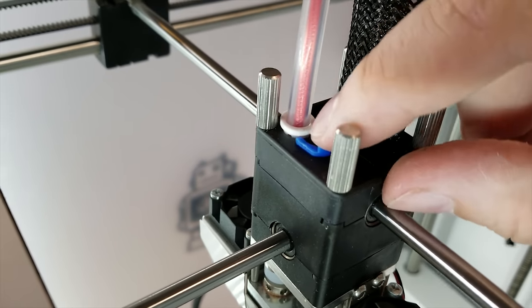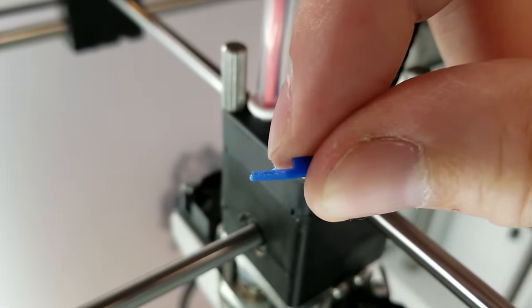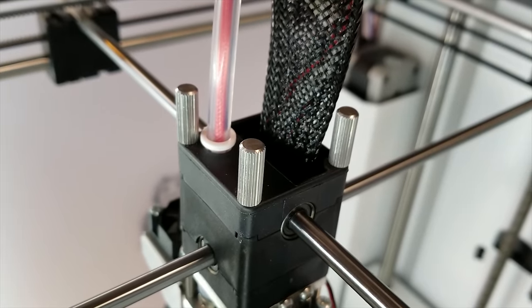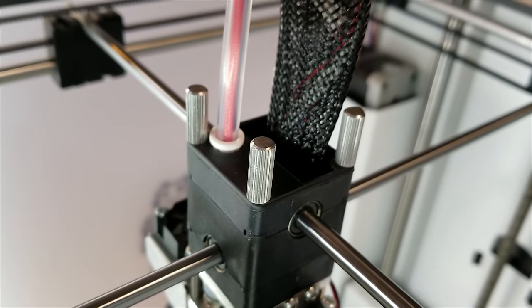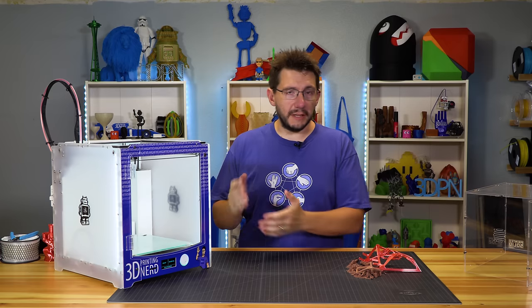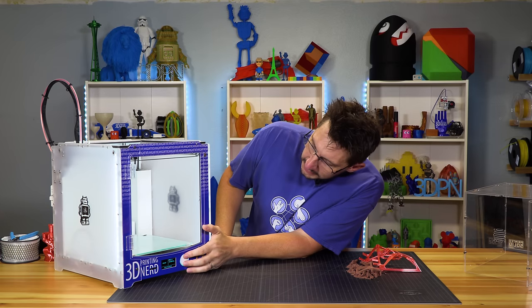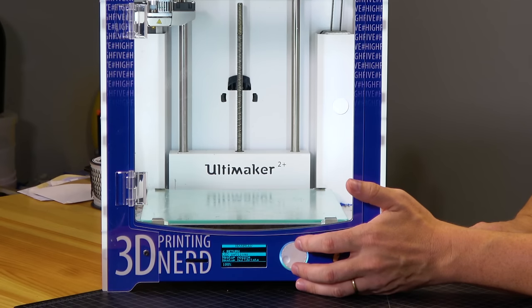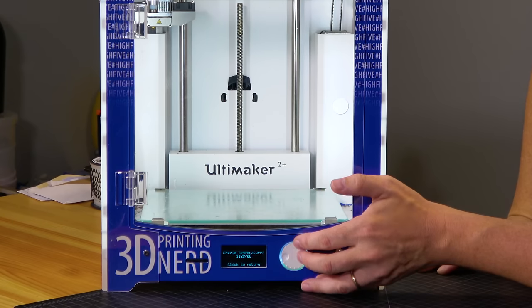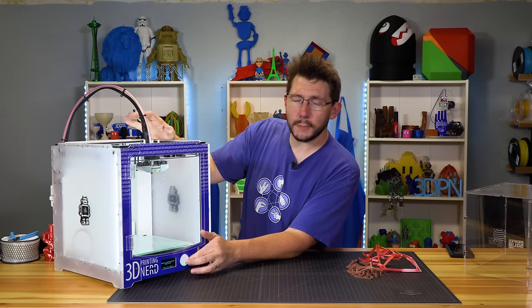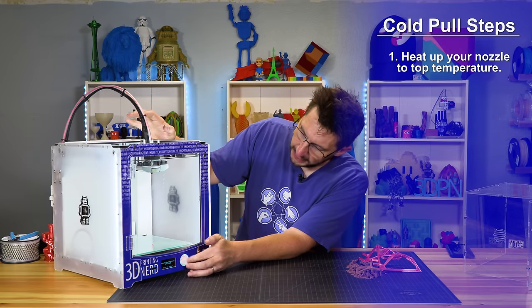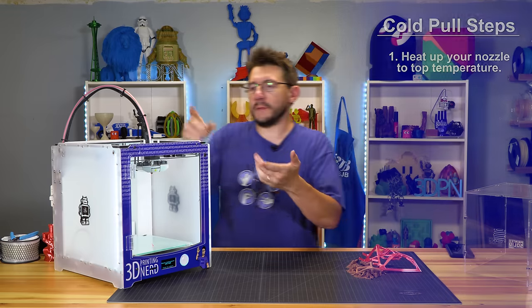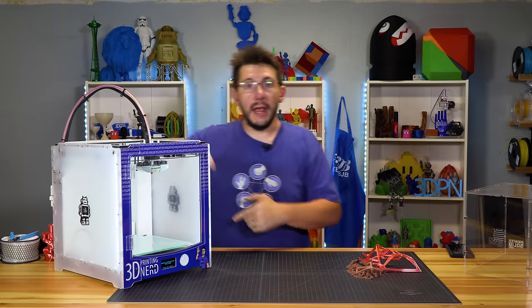What we're going to do is take off this little clip and set it aside so we don't lose it, because I've lost these before. After you've taken that out, it's best now to actually use the Ultimaker's menu system to remove the filament. We're going to go to Maintenance, then Advanced, then Heat Up Nozzle. We're going to set the temperature as high as it'll go, and on the Ultimaker 2 Plus that's 260 degrees C.